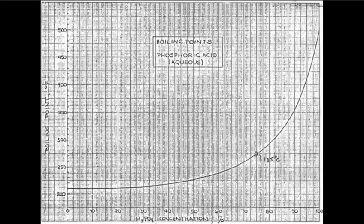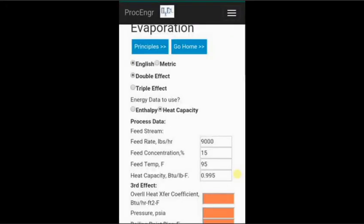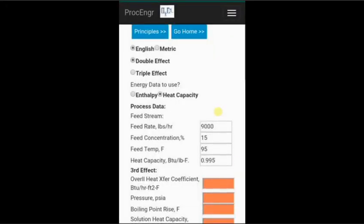We know the specific heat of 75% acid at 275 degrees Fahrenheit. And we can guess that the concentration, boiling point rise, and related specific heat of acid in the second effect.